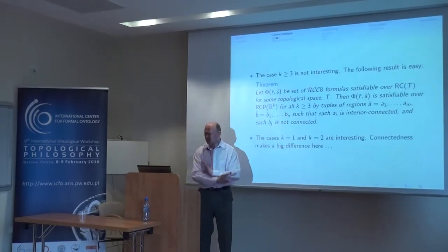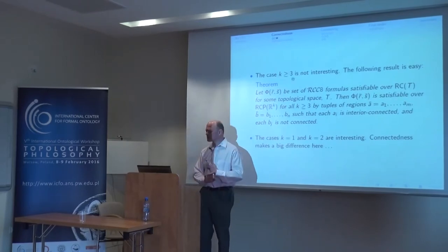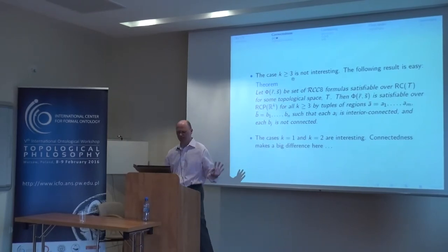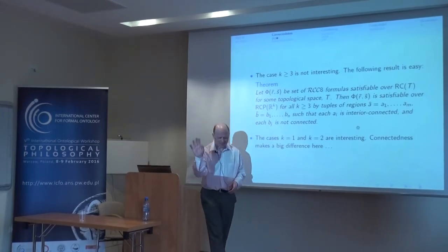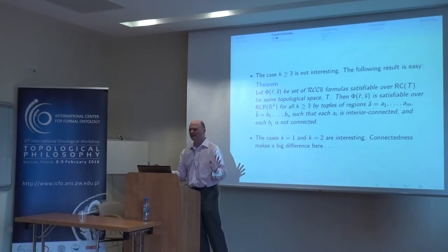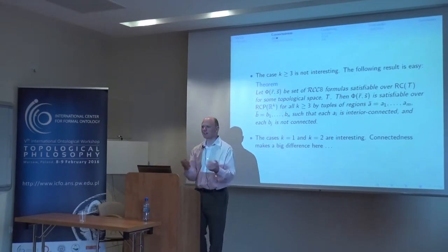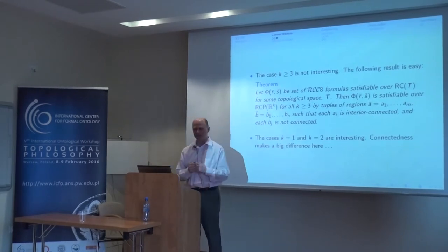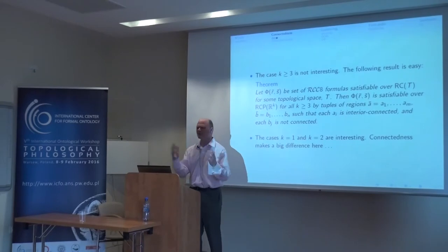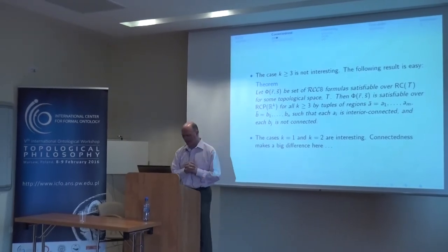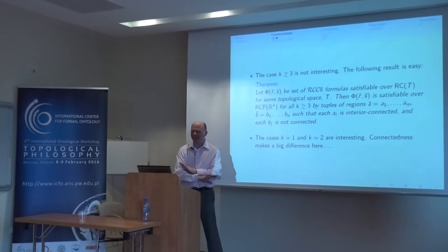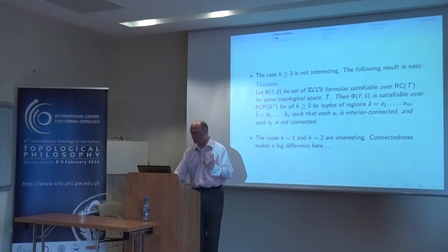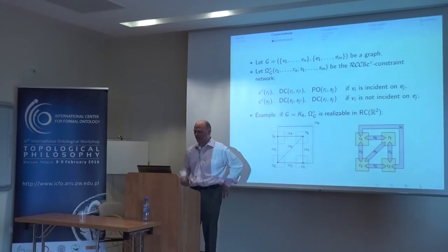So we have problems now: the satisfiability problem for RCC8 with connectedness over Euclidean spaces of various dimensions, and similarly RCC8 with interior connectedness. What's known about this? For dimension greater than 3, nothing is interesting — you can always make anything connected. If there's a satisfying arrangement satisfying some collection of RCC constraints, you can always make any subset of the regions involved connected. So connectedness is not interesting in dimensions greater than 3. Dimensions 1 and 2 are interesting — let's talk about dimension 2.